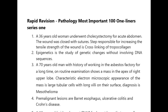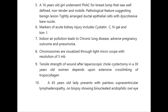A 70-year-old man with history of working in an asbestos factory for a long time, on routine examination shows a mass in the apex of the right upper lobe. The characteristic electron microscopic appearance of the mass is large tubular cells with long villi — this is the keyword. Diagnosis is mesothelioma.